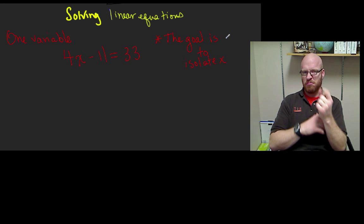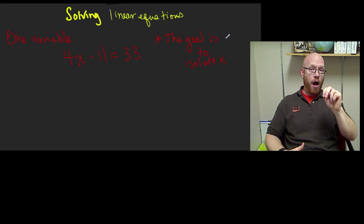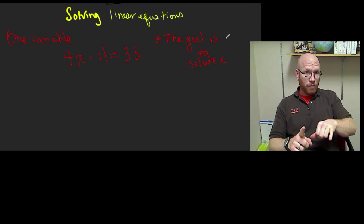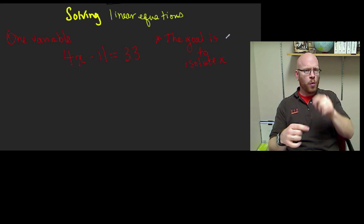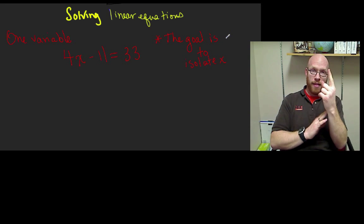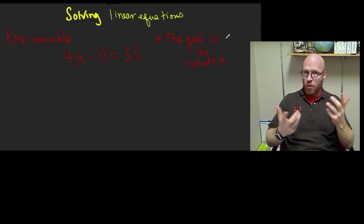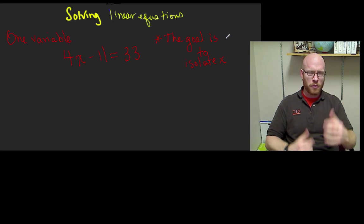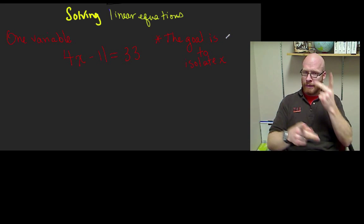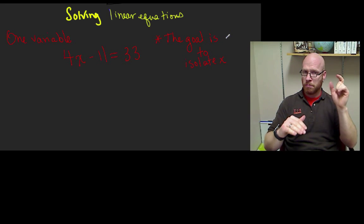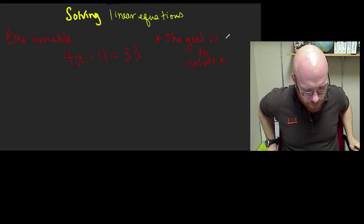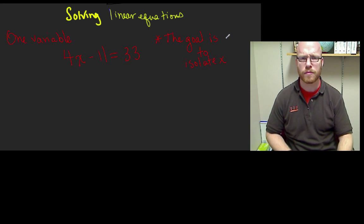We need to see what's blocking our way from having x isolated. We have negative 11, so we want to undo negative 11 — 4x minus 11. The opposite would be to add 11. When we do that, we'll get zero, but we need to do it on both sides, left and right, to maintain balance in our equation.